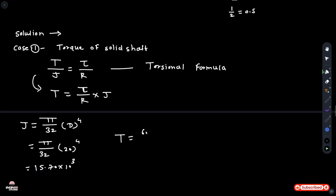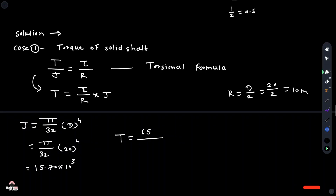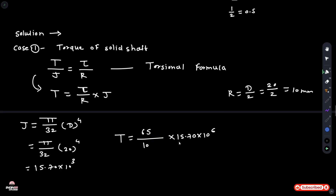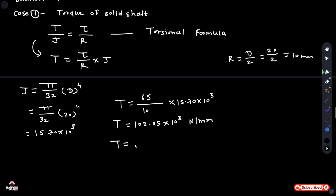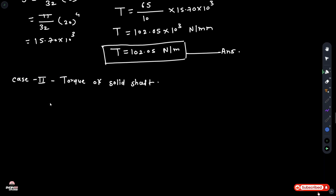T equals 65 divided by r. Since r equals d divided by 2, r equals 20 divided by 2, which equals 10 mm. So T equals 65 divided by 10, multiplied by 15.70 times 10 cubed, giving T equals 102.05 times 10 cubed newton per mm, or 102.05 newton per meter.